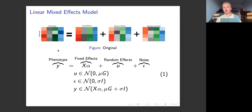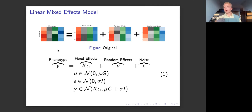The random effects are drawn from a normal distribution, but this time with a variance controlled by the parameter mu and a structure given by a matrix G. The G matrix gives the random effects a structure able to account for environmental confounding. We want to ask ourselves: what is G, how do we encode it, and how is it put together?